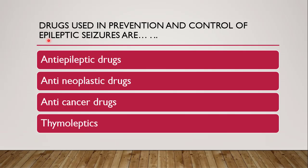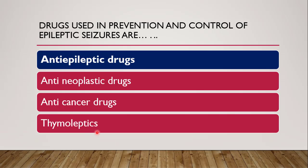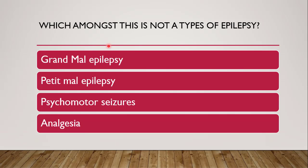Next question: drugs used in the prevention and control of epileptic seizures are — whether they are anti-epileptic drug, anti-neoplastic drug, anti-cancer drug, or thymoleptics. The correct answer is anti-epileptic drug, since they are used in the prevention and control of epileptic seizures.